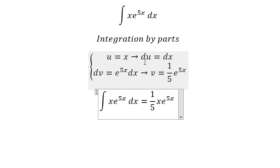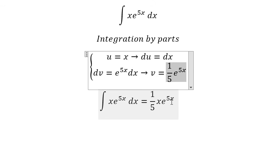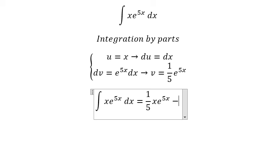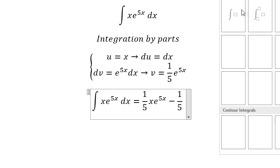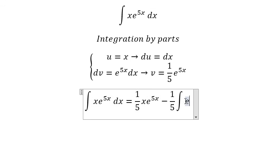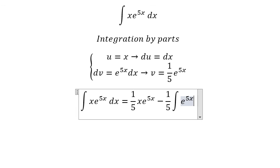Next we have the integral of v du. So we have negative 1 over 5 times the integral of e to the power of 5x dx.